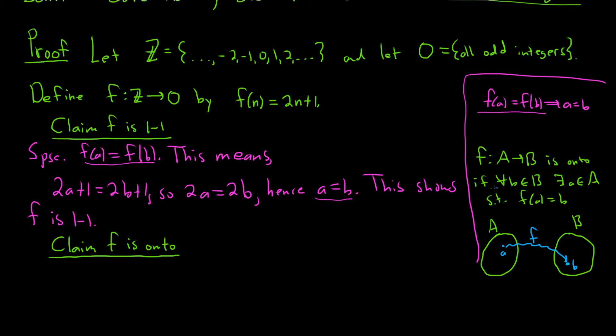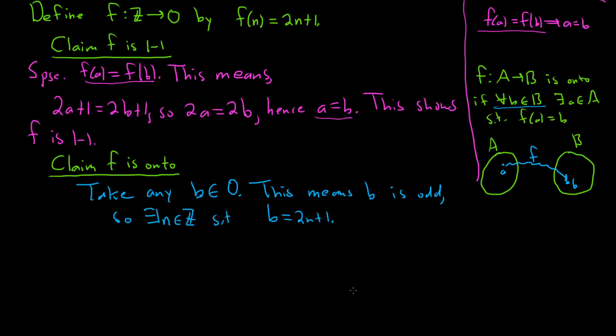So we'll start the proof by taking some element in the co-domain. Take any little b in O. So now we have to use what it means for b to be in O. Well, O is the set of odd integers. So this means b is odd. And what does that mean? That means there exists an integer n in Z such that b is equal to 2n plus 1. So b can be written as 2n plus 1.